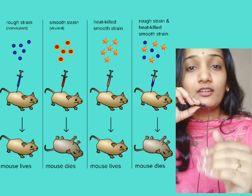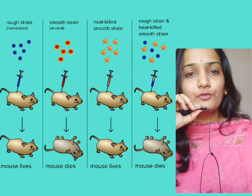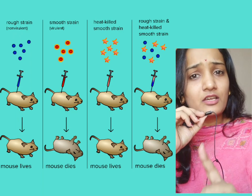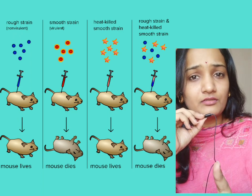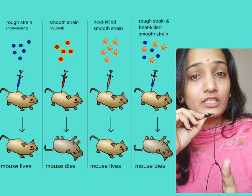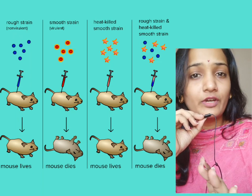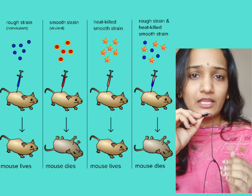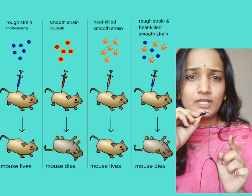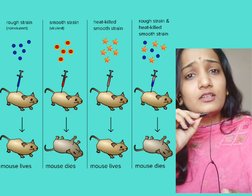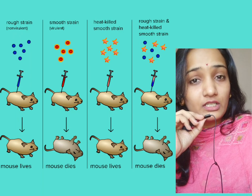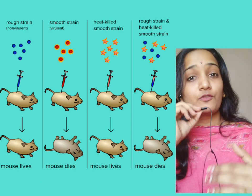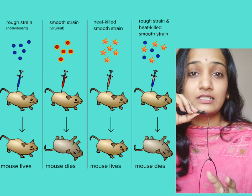So here are four conditions. In the first condition, he has given rough strain which is non-capsulated, non-pathogenic and non-virulent, and because of which the mouse lives. In the second condition, he has given smooth strain which is capsulated, virulent and pathogenic, and because of which the mouse dies.